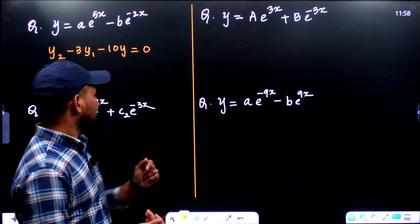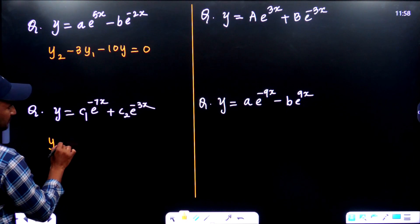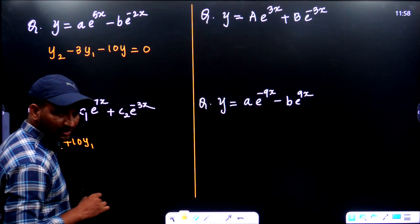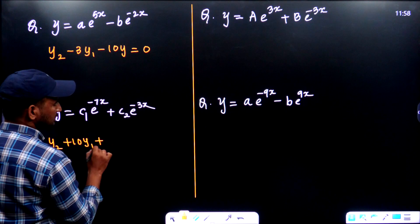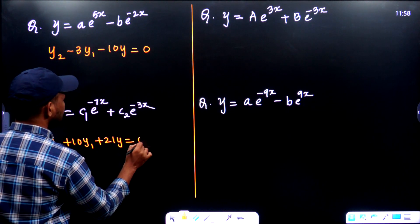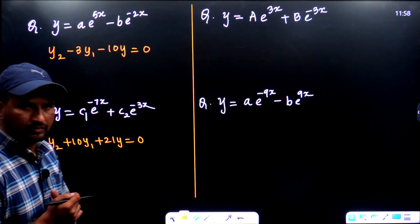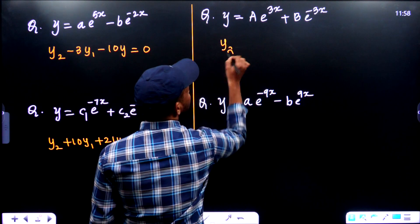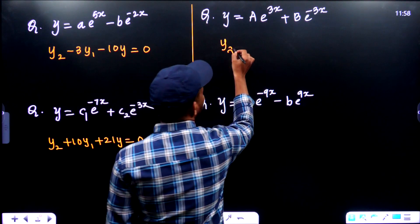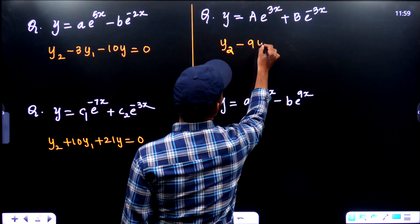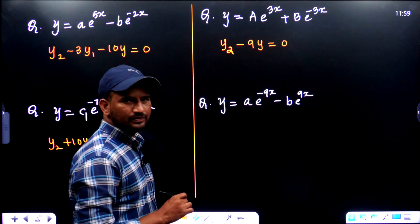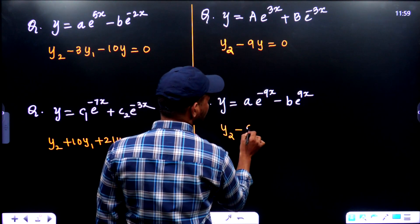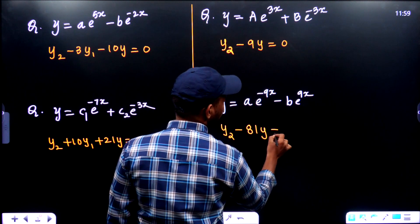The answer for the next question is y2 + 10y1 + 21y = 0. The answer for the following question is y2 - 9y = 0. The answer for this question is y2 - 81y = 0. This is a very simple method to answer these several questions in the examinations.